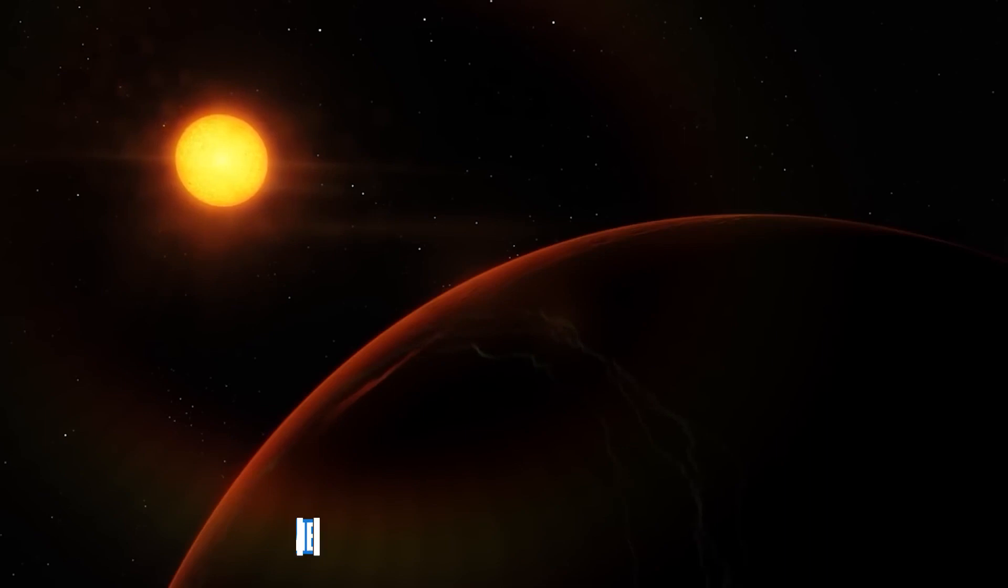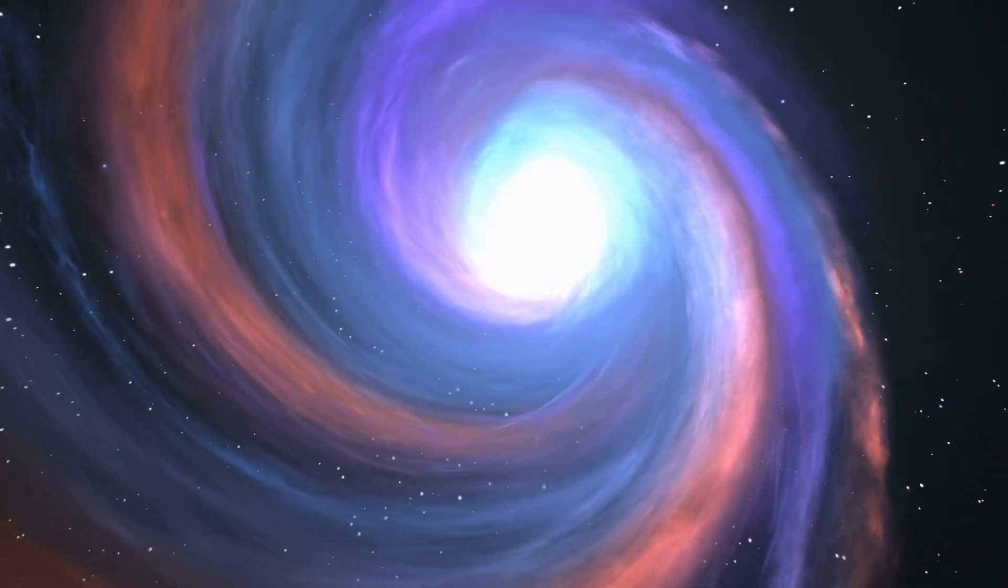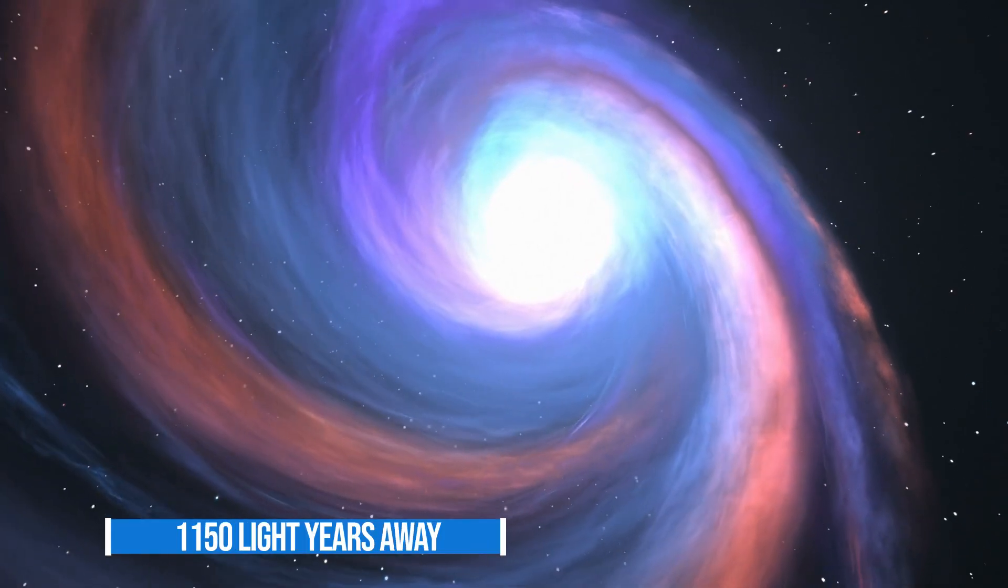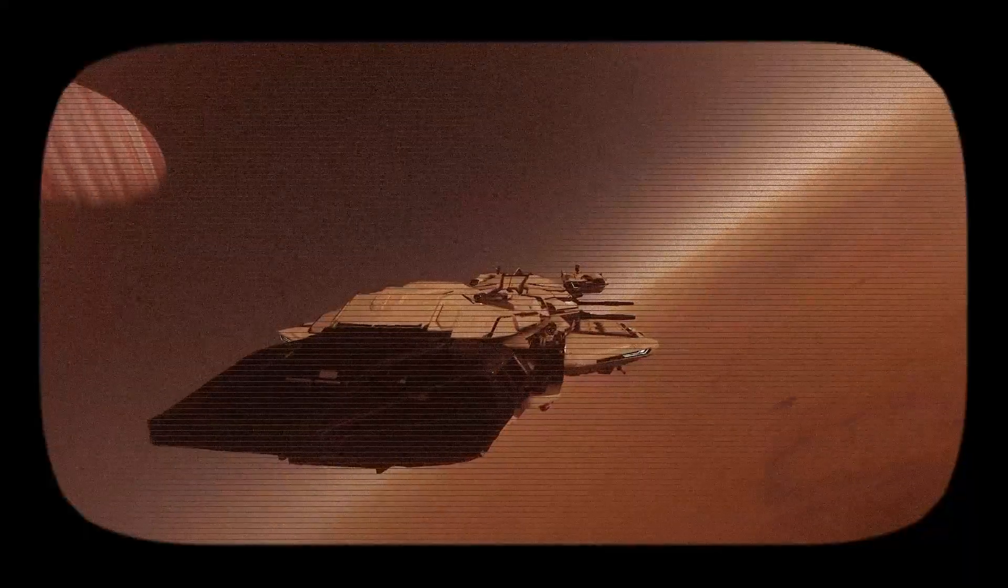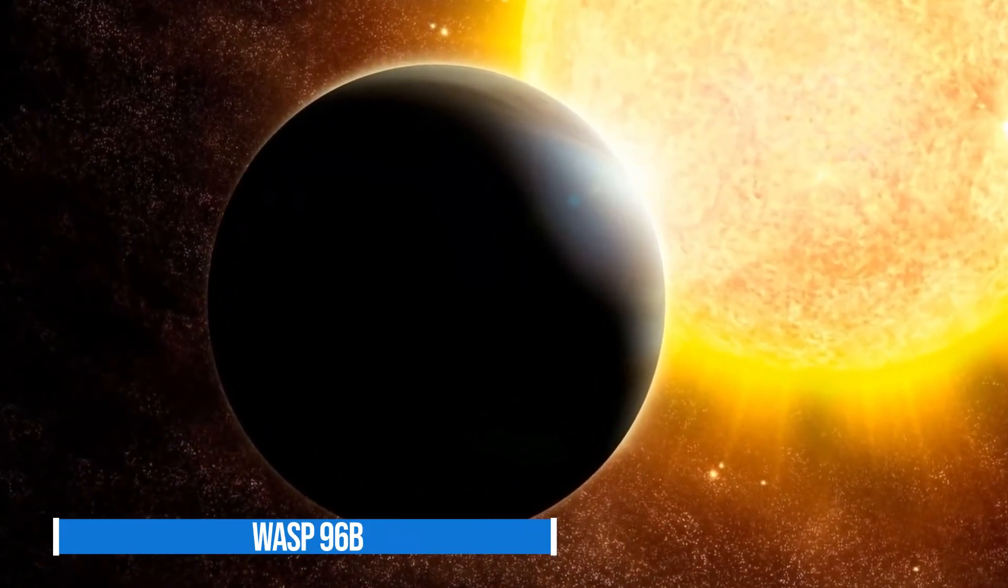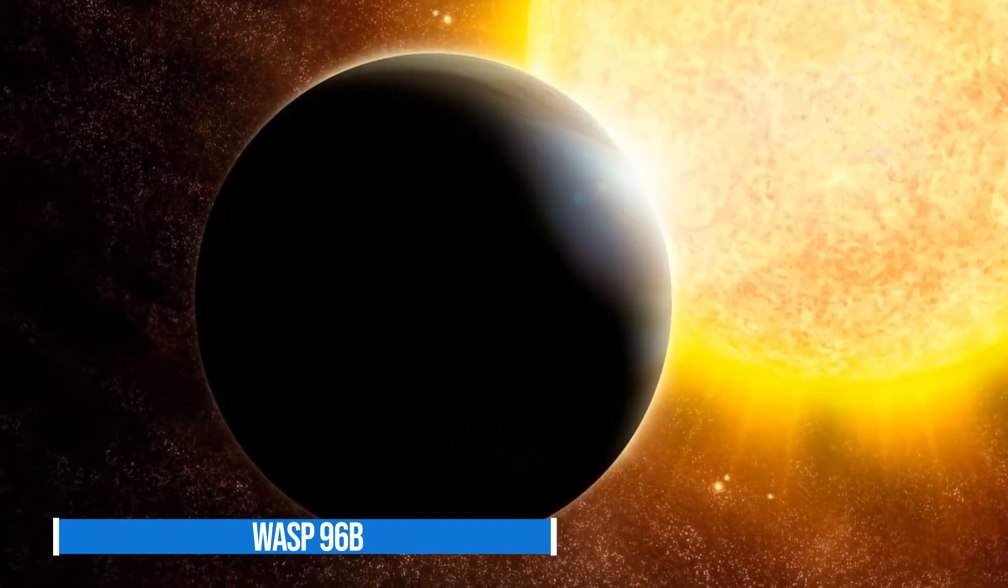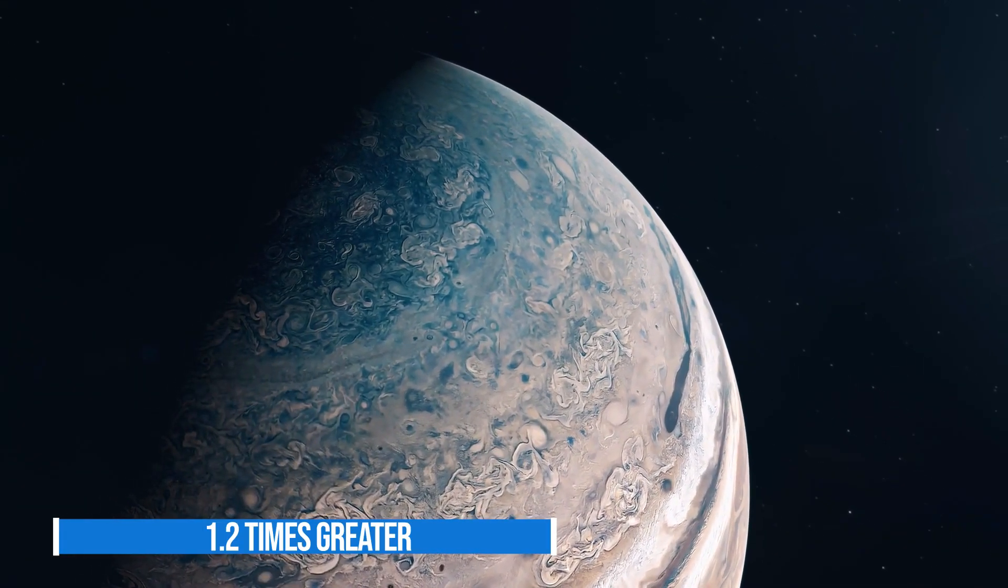WASP-96b is one of more than 5,000 confirmed exoplanets in the Milky Way. It is located approximately 1,150 light-years away in the southern sky constellation Phoenix. WASP-96b is a type of gas giant that does not have a direct analog in our solar system. It has a mass that is less than half that of Jupiter and a diameter that is 1.2 times greater than Jupiter's.